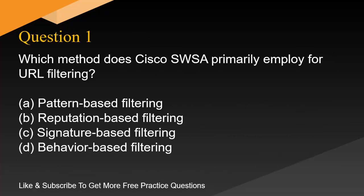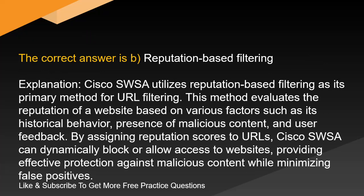Question 1. Which method does Cisco SWSA primarily employ for URL filtering? A. Pattern-based filtering. B. Reputation-based filtering. C. Signature-based filtering. D. Behavior-based filtering. The correct answer is B. Reputation-based filtering.